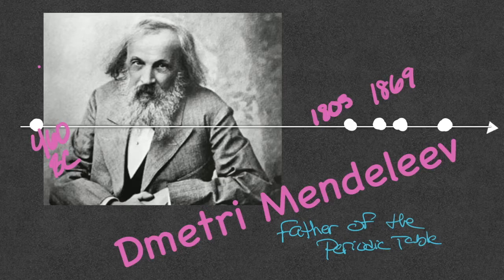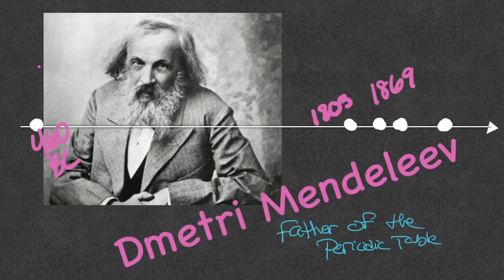He's given that credit not necessarily because he was the first to call it a periodic table, but because he was the first to realize there is a pattern. When elements are placed on the periodic table in a certain order, a pattern arises. In fact, Mendeleev was so sure of this pattern that he left gaps in the periodic table for elements not yet discovered. Several years later, those elements were discovered and fit right where Dmitry had left those holes.